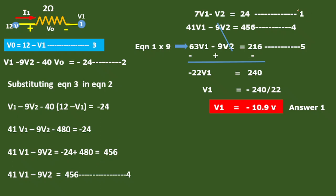We write the first equation alongside the fourth equation, then multiply equation 1 by 9 to get 63V1 minus 9V2 equal to 216 — this is our fifth equation. Subtracting the fifth equation from the fourth, the V2 terms cancel, leaving minus 22V1 equal to 240. Therefore V1 equals minus 240 divided by 22, which is approximately minus 10.9 volts.